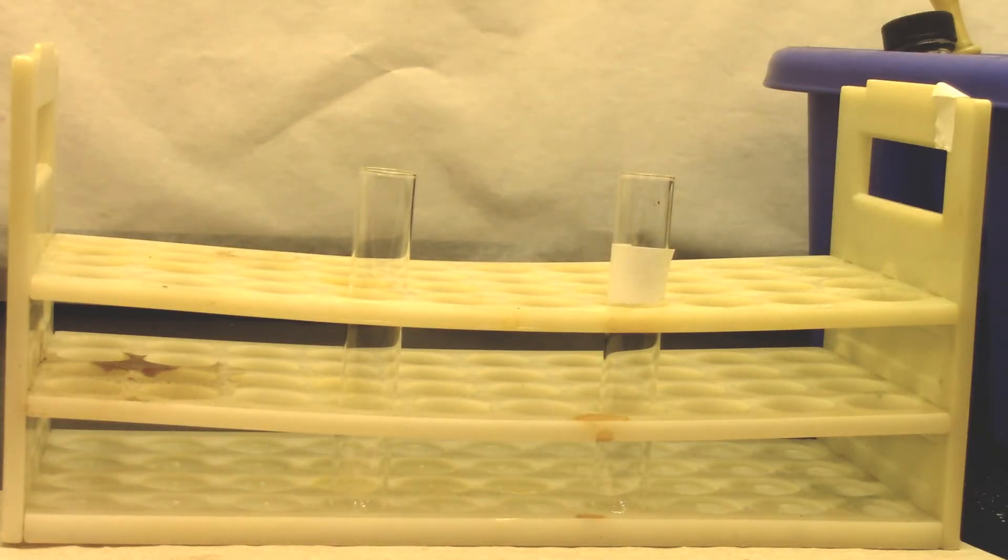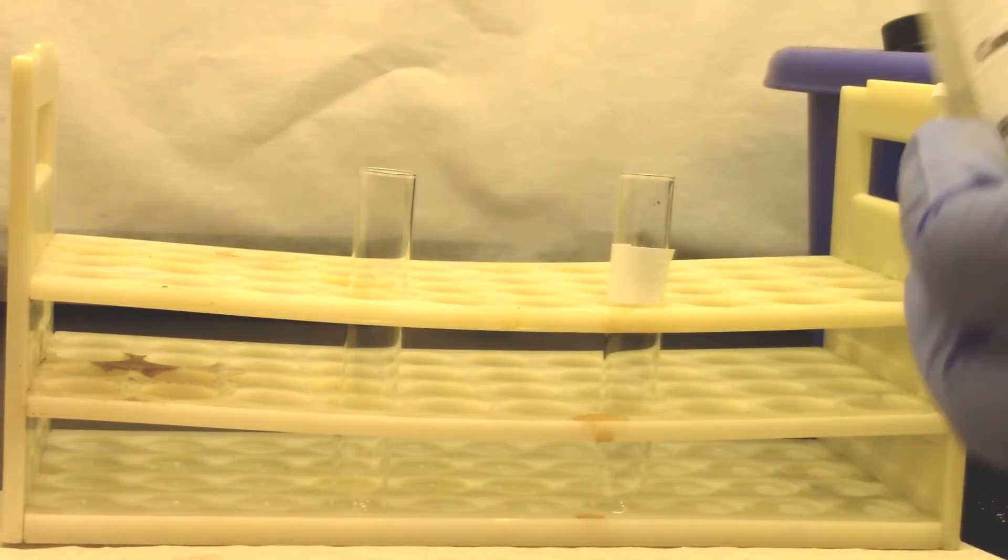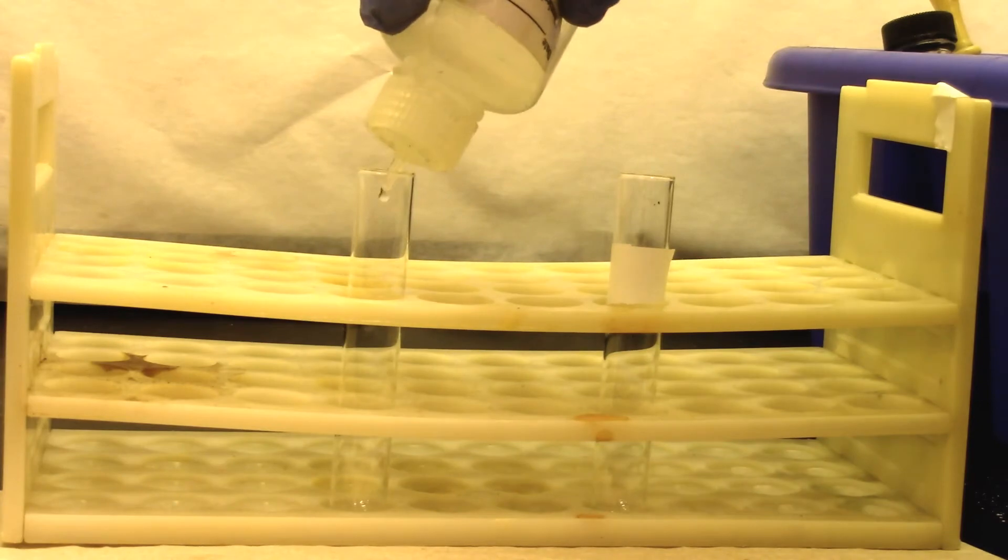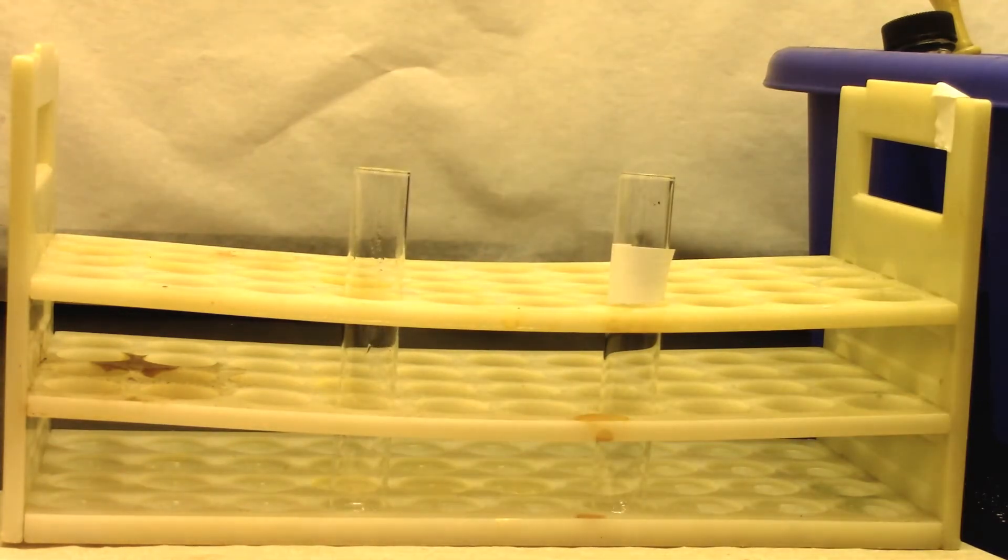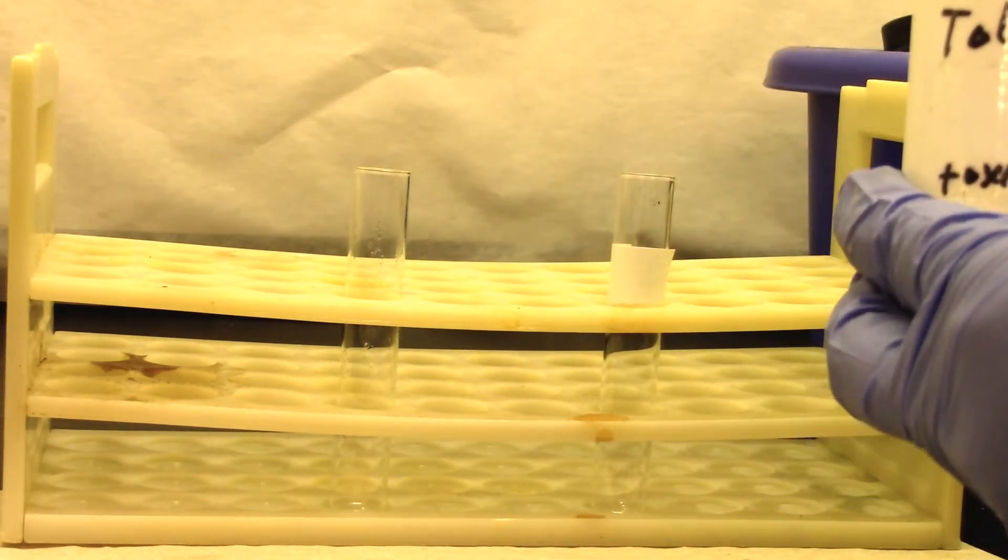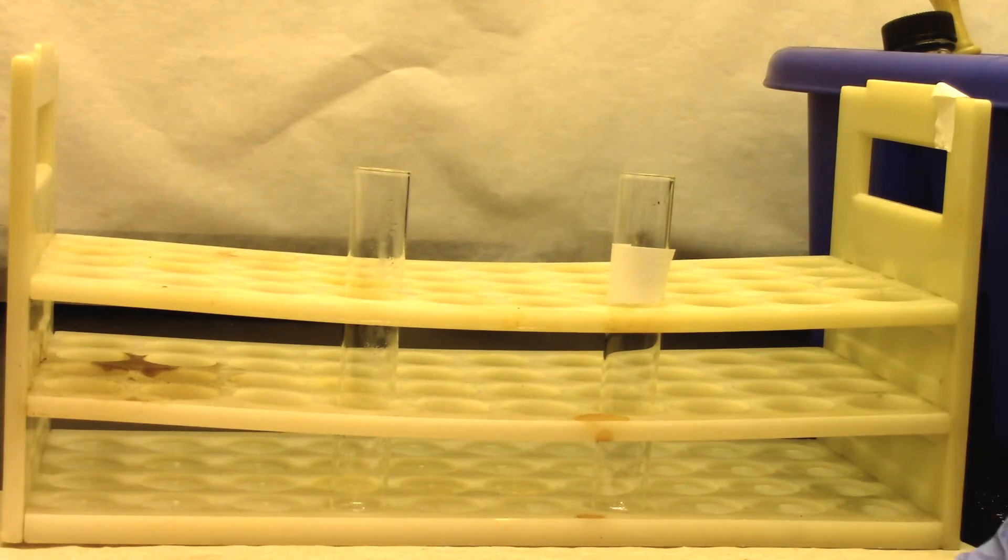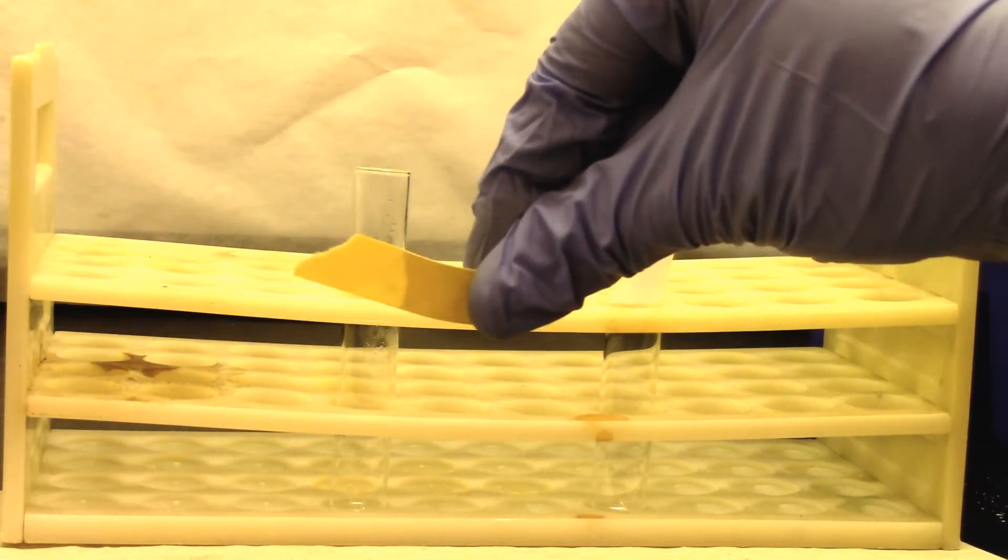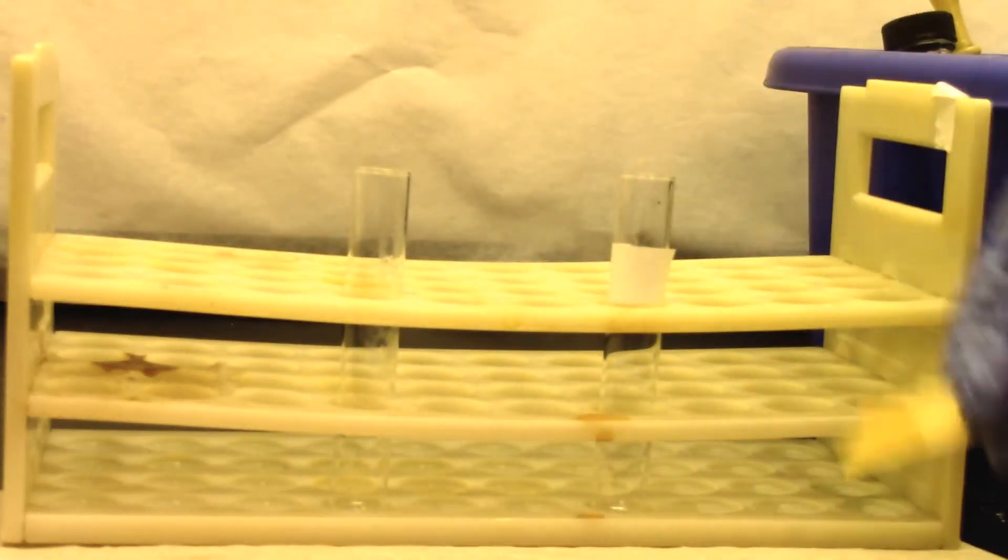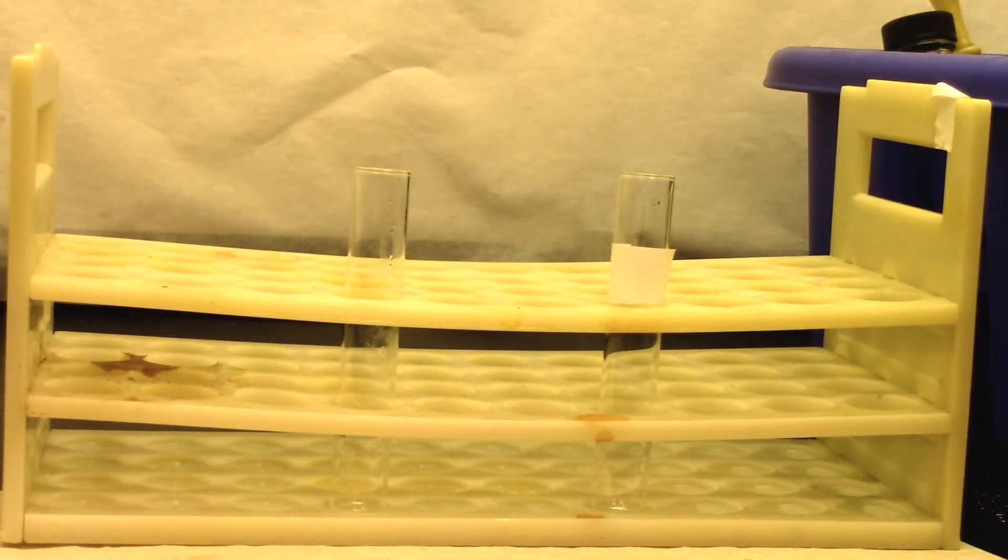We will be doing acetyl chloride test for alcohols. Methanol is my reagent, and then toluene is for my negative test. I have a moist litmus paper ready, and I am going to hold it on top while I add my acetyl chloride.